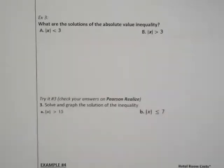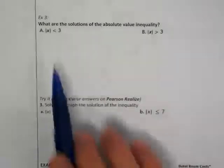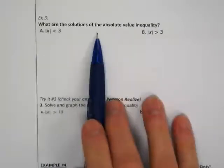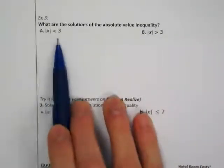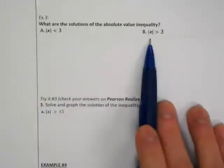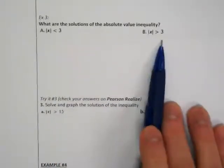Okay, I'd like your focus up here as we look at example 3. So what are the solutions of the absolute value inequality? Absolute value of x is less than 3, and we have the absolute value of x is greater than 3.